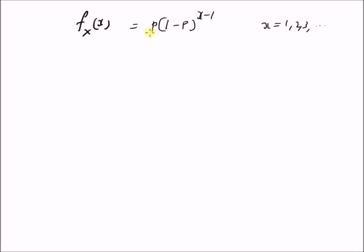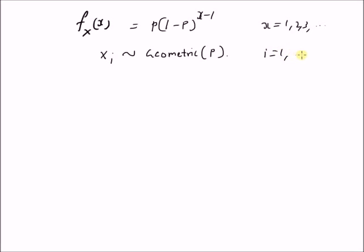We want to find an estimate of p from a set of observations of size n. Each x_i has a geometric distribution with parameter p. We assume these observations are i.i.d., that is, independent of each other.